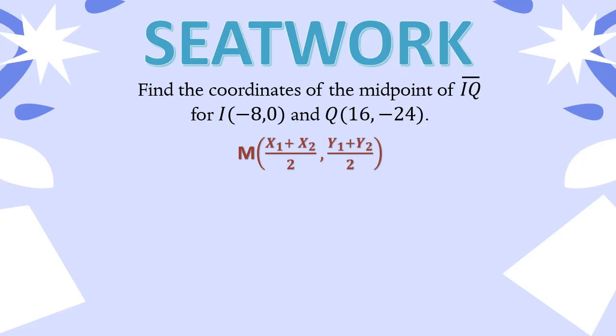For our activity, find the coordinates of the midpoint of segment IQ, where I is negative 8, 0 and Q is 16, negative 24. We have our formula to find the coordinates of the midpoint, and I'm going to name the midpoint M. As I mentioned before in our previous topic, it's better if we determine first where is our x sub 1, x sub 2, so that we will not get confused. So this will be our x sub 1, this will be our y sub 1, and this would be our x sub 2, this would be our y sub 2.